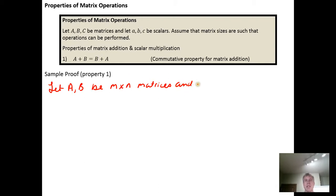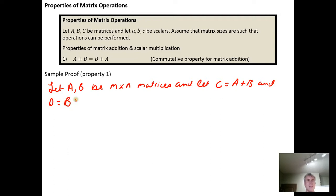Let matrix C equal the sum A plus B, and let matrix D equal the sum B plus A. To show that A plus B equals B plus A, what we need to show is that C equals D — that matrix C and matrix D are the same.